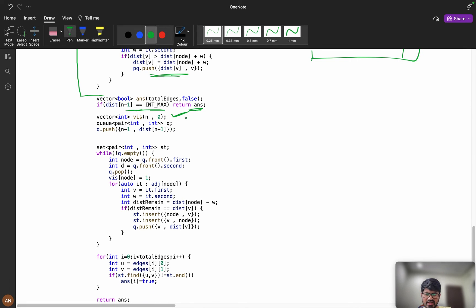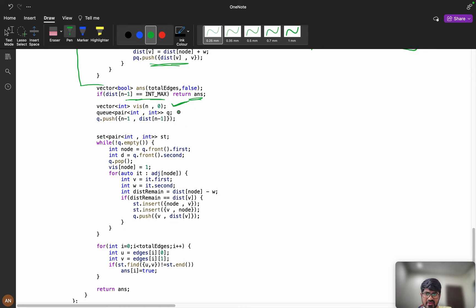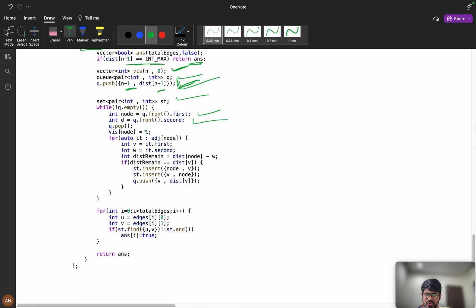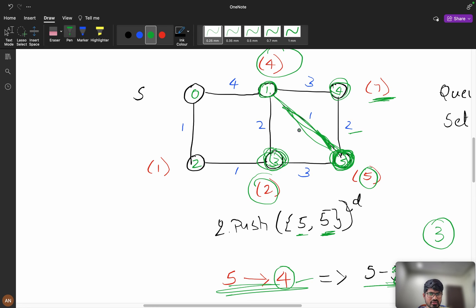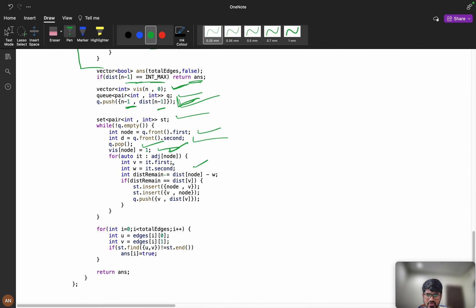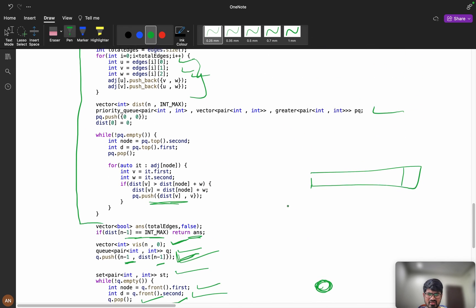And here vector int visited n comma 0 to check whether visited or not. And we are using only queue, not the priority queue. And we are pushing queue n minus 1 and we are pushing the distance. And we are using the set. Queue dot front, queue dot first, we got this and we are popping it and visited node equals to 1. Now we are going to every adjacent vertex and distance remaining, what we will do? Distance node minus w, right? So distance remaining means we got this node, so we will subtract this node. So the remaining distance is 4, so you will get the 4. And if my distance remaining equals to distance of my that vertex, that means hash table dot insert, hash table dot insert node comma v or v comma node, anything can be possible because it is an undirected graph. And we will push that into queue. And finally we will iterate and we will check in the set.